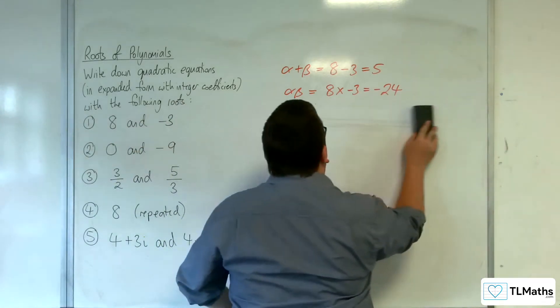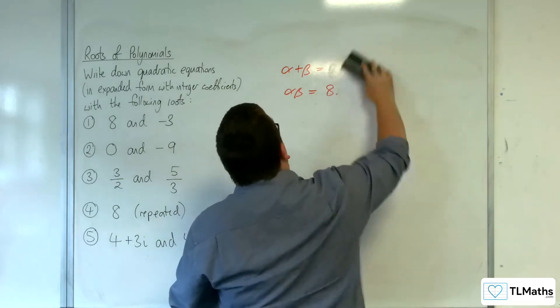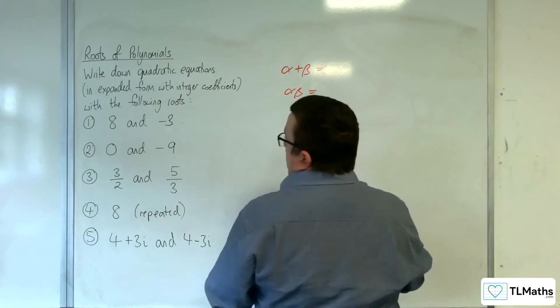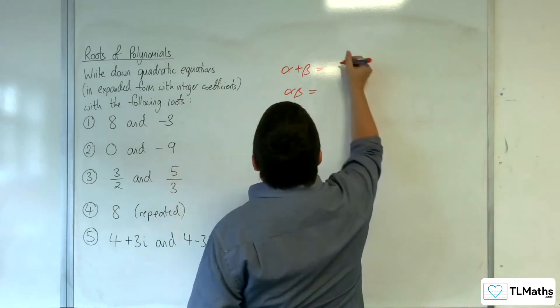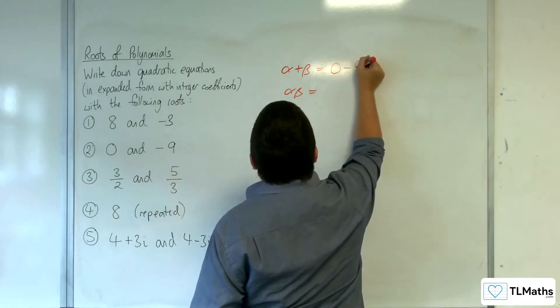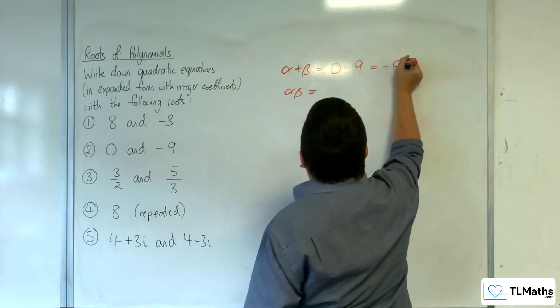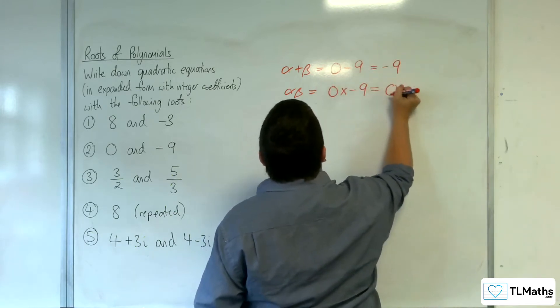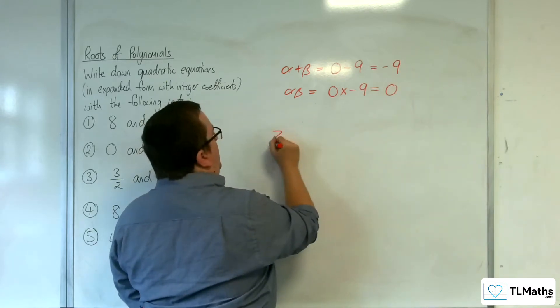Right. Let's have a look at the next one. So we've got 0 and minus 9. So we've got 0 plus negative 9, so minus 9. And alpha beta is 0 times minus 9, so 0. So you've got z squared,